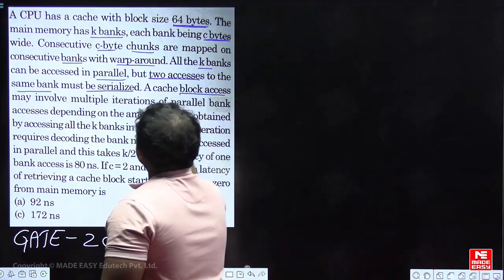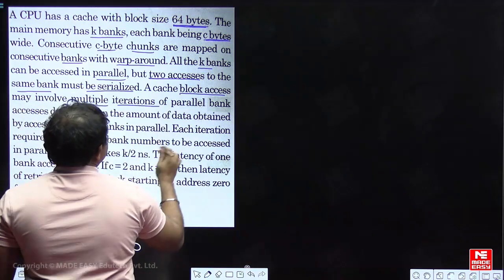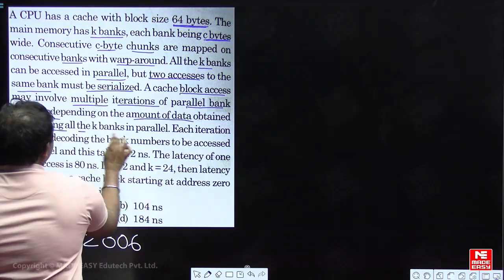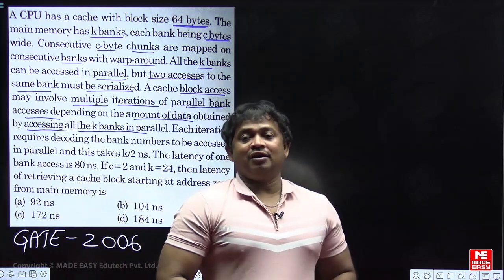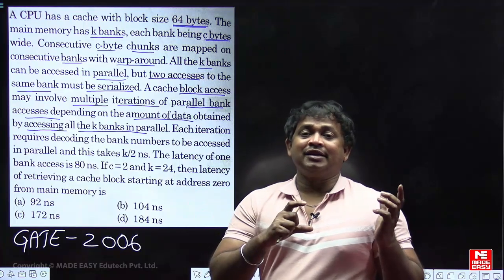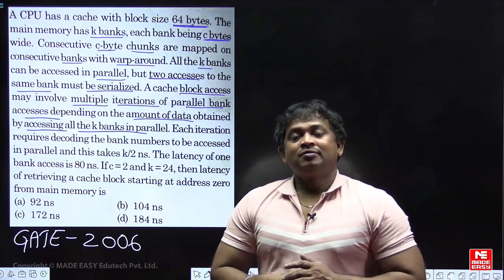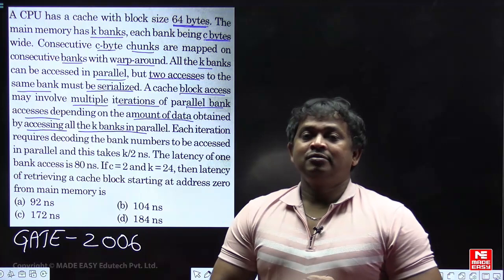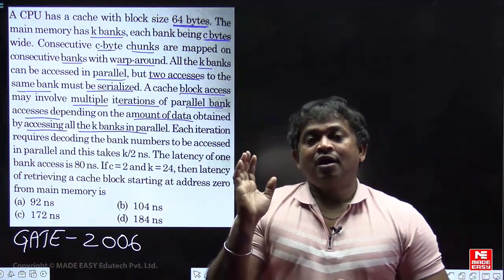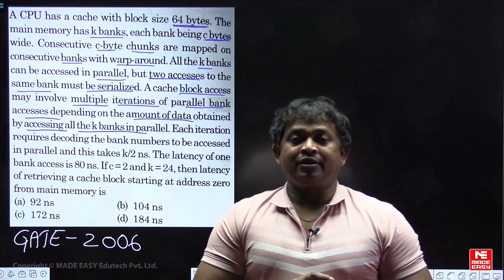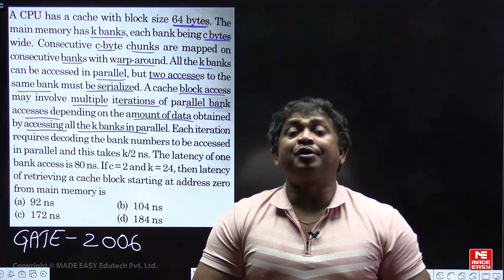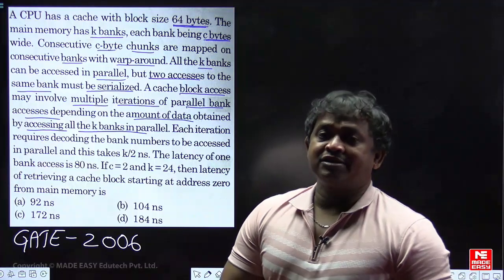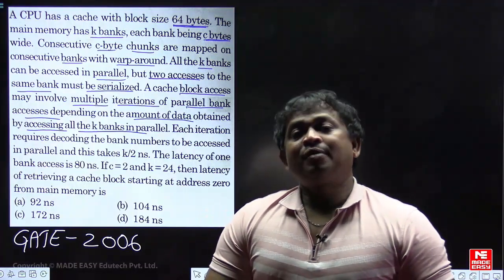A cache block access may involve multiple iterations of parallel bank accessing, depending on the amount of data obtained by accessing all K banks in parallel. Cache block accessing time depends on how much data we access from the main memory unit in one iteration. Based on that, we can decide the number of iterations required.